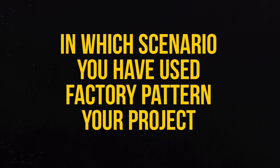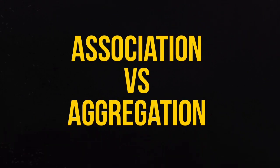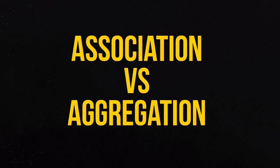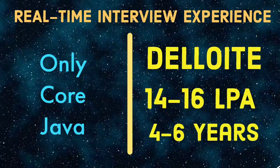Next question: in which scenario have you used the Factory design pattern? If you have used it, describe all the details. Next question: what is the difference between aggregation and association? Aggregation typically represents a 'has-a' relationship, denoted by a diamond symbol. Association is a relationship between two objects, denoted by an arrow symbol. Aggregation is a type of association, while association does not depend on aggregation.